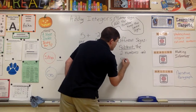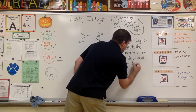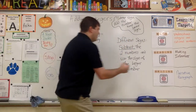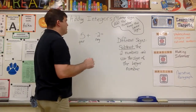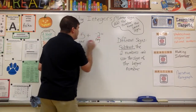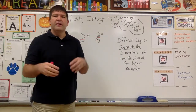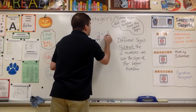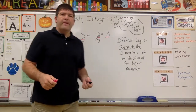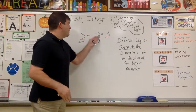With different signs, you subtract the two numbers — you don't add them, you subtract them — and use the sign of the larger number. You're just looking at the digits here. I have a two and I have a five. I take the five and I subtract the two and it leaves me with three. It doesn't matter which way it is; you always take the bigger number and subtract the smaller to see what you have left.